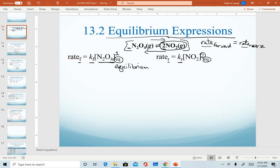Now our definition here for equilibrium: once the rate of the forward reaction equals the rate of the reverse reaction, my system is at equilibrium. That means I can set my two equations equal to each other.